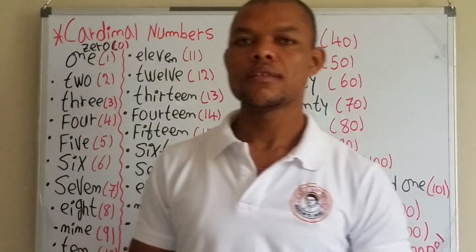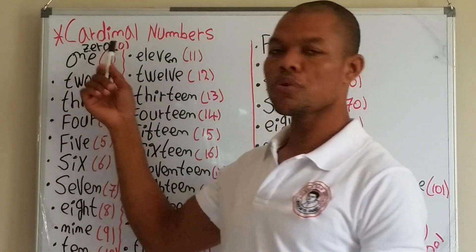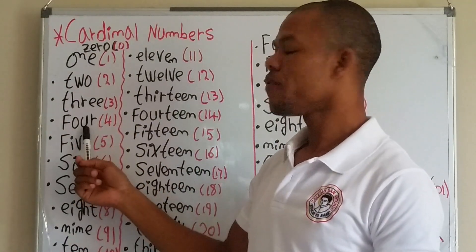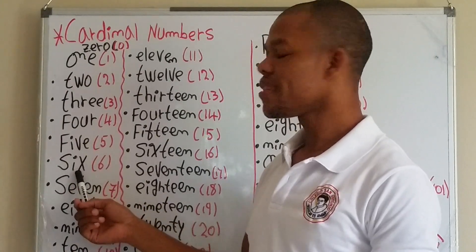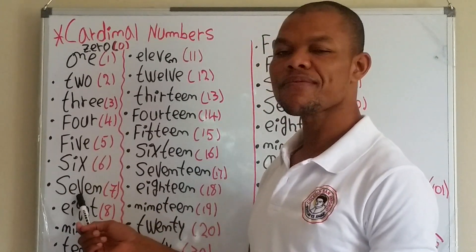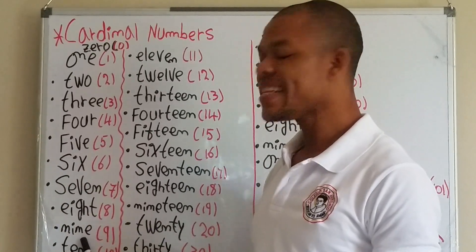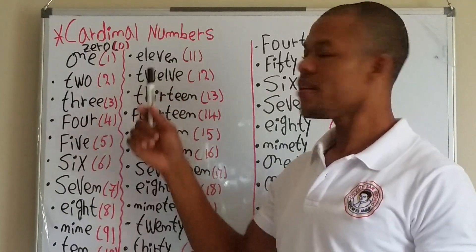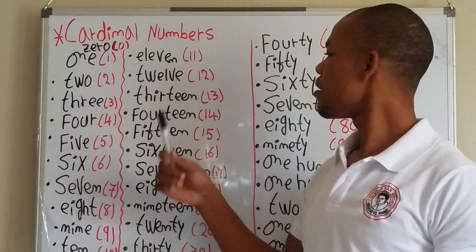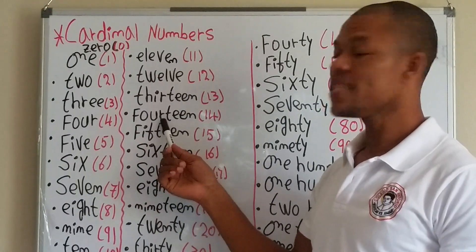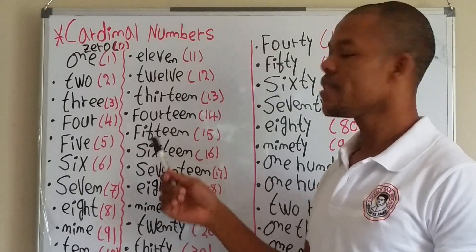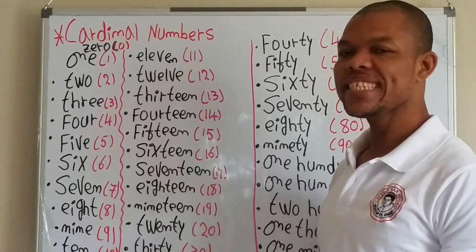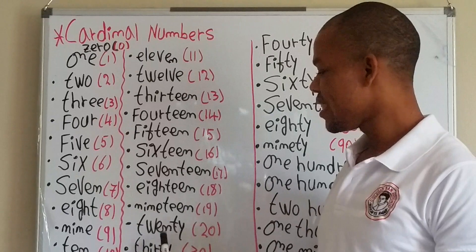And once again: 0, 1, 2, 3, 4, 5, 6, 7, 8, 9, 10, 11, 12, 13, 14, 15, 16, 17, 18, 19, 20.